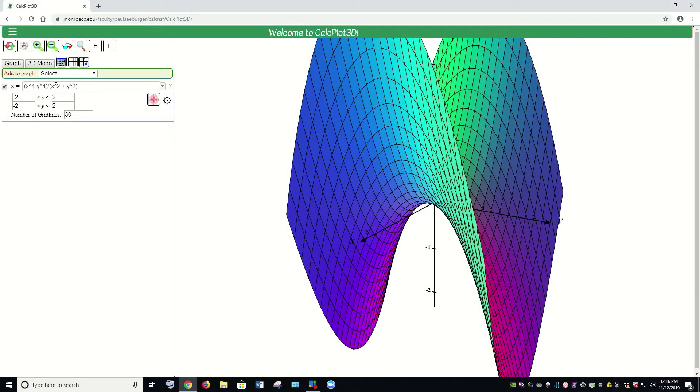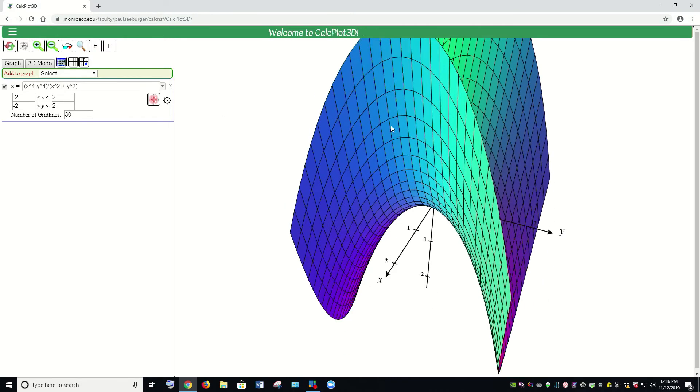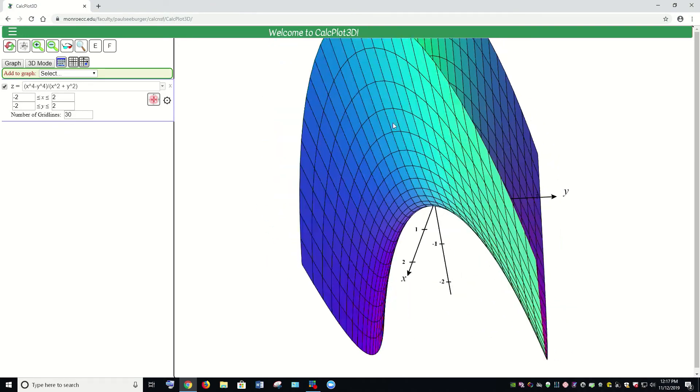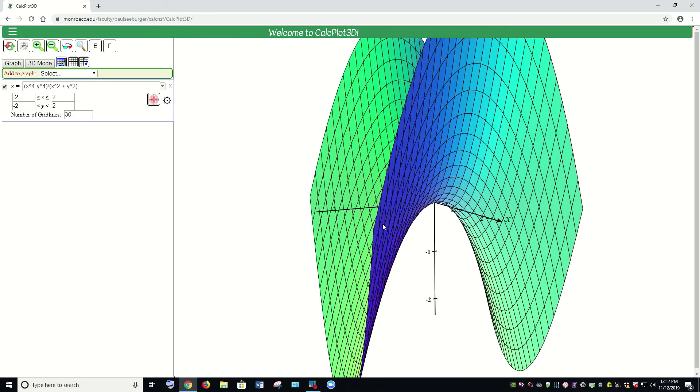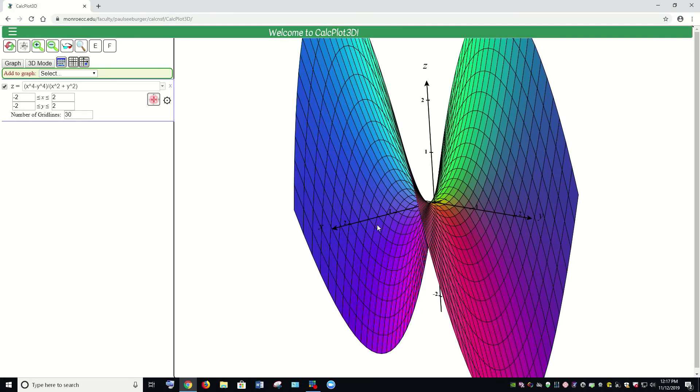Here on the computer, you can see that I've graphed this in CalcPlot3D, and I've graphed our function z equals x⁴ - y⁴ over x² + y². You can see when I look at this and rotate it around, it really just looks like a saddle graph. If you think about the simplified version of the function z = x² - y², you might recognize that as a hyperbolic paraboloid. It's one of the classic examples we've looked at.